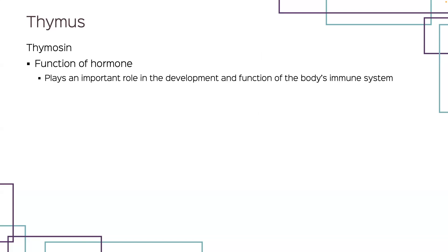The thymus is located within the mediastinum, and in infants it may extend up into the neck as far as the lower edge of the thyroid gland. Like the adrenal gland, the thymus has a cortex and a medulla. Both portions are composed largely of lymphocytes, and the thymus is the location where many of the body's cells of immunity develop. The hormone thymosin is actually a group of several hormones that together play an important role in regulating the development and function of T cells. This small structure, weighing about 20 grams, plays a critical role in the body's defense against infections and cancer.